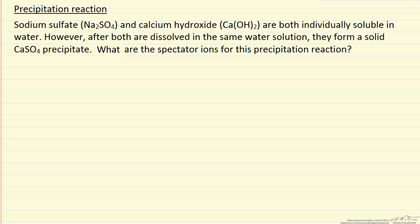This is a problem I have not looked at before, so I will try and demonstrate how I would go about solving this. The first thing always is to write down what I know, and that is I am adding sodium sulfate and calcium hydroxide to a solution, and I am going to form calcium sulfate as the precipitate.